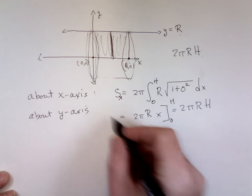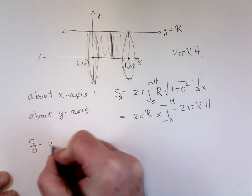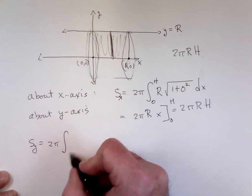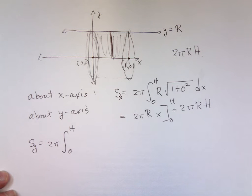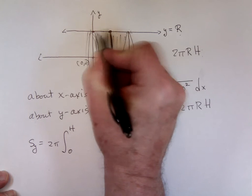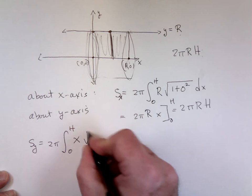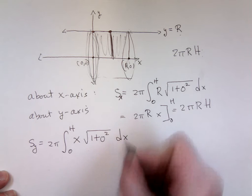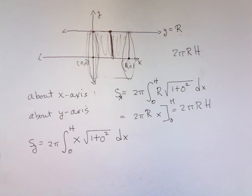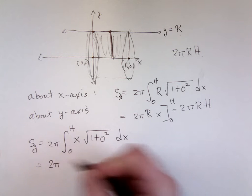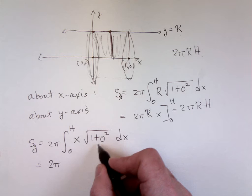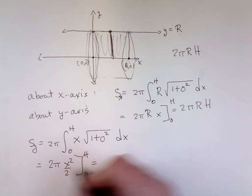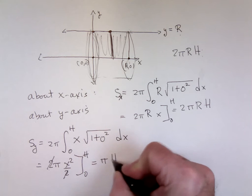So around the y-axis, we're going to get 2π, the integral. As we go around the y-axis, x is still going to go from 0 to h. Now what's the distance from the y-axis equal to? x. Square root of 1 plus the derivative squared — the derivative is still 0, that doesn't change. So we end up with 2π times the integral of x, which is x squared over 2, from 0 to h. The 2's cancel and we end up with πh².